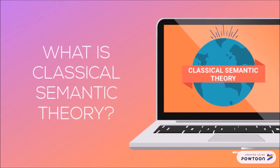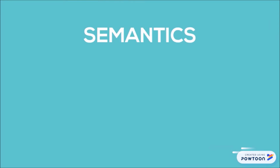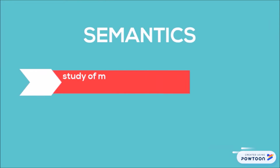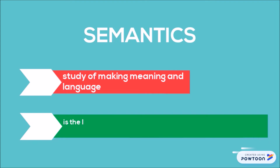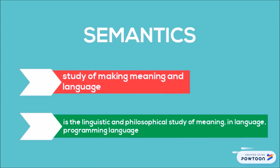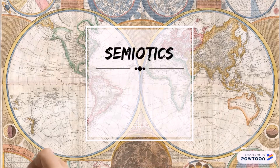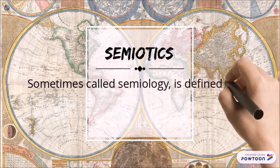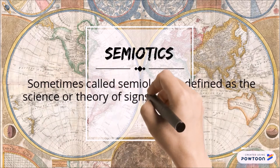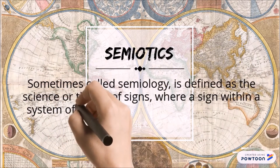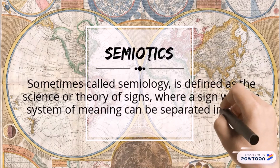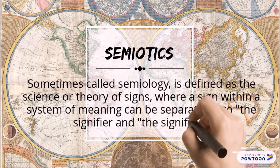What is Classical Semantic Theory? Semantics is the study of making meaning in language. It is also the linguistic and philosophical study of meaning in language, programming languages, formal logics and semiotics. It is sometimes called semiology, defined as the science or theory of signs, where a system of meaning can be separated into the signifier and the signified.